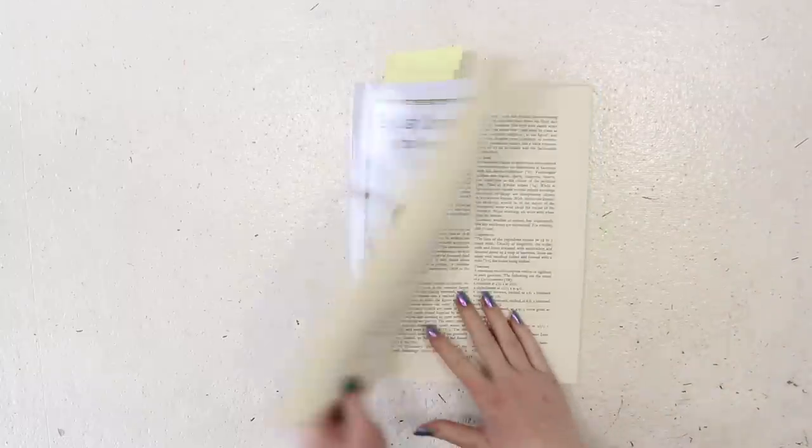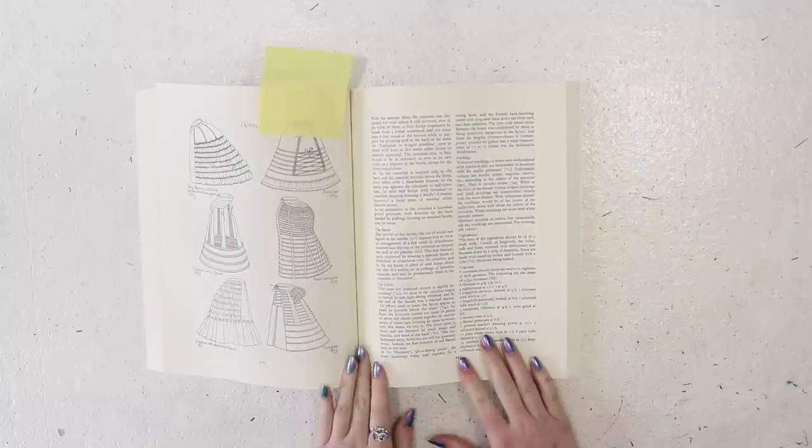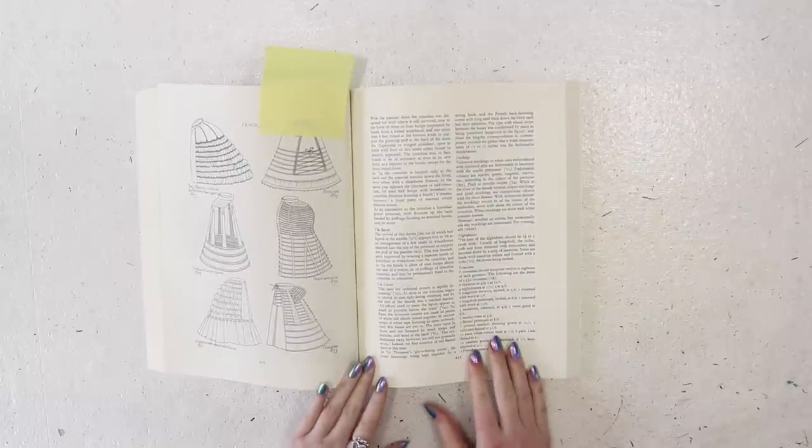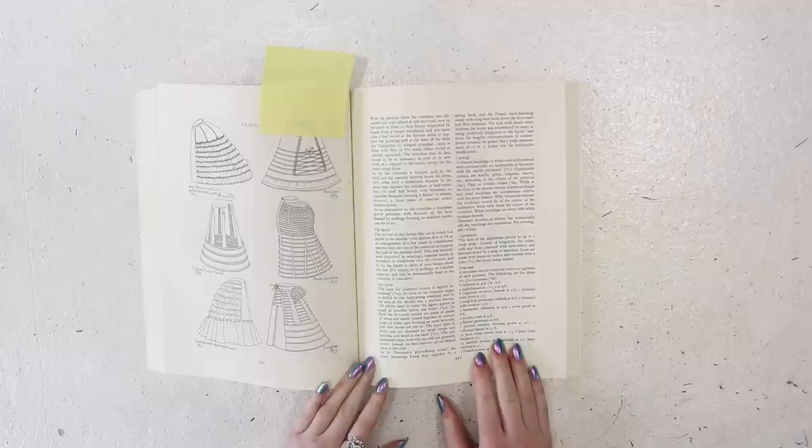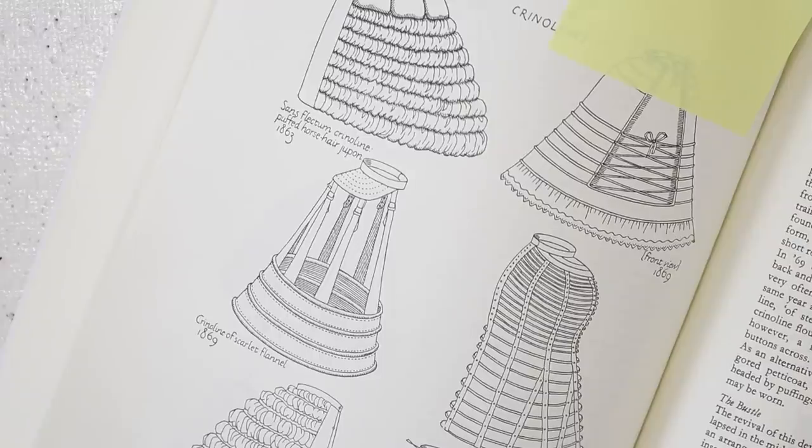The inspiration for these hoop skirts came from English Woman's Clothing in the 19th Century by C. Willett Cunnington. A fashion plate found on page 250 shows a drawing of a hoop skirt described as a crinoline of scarlet flannel from 1869.